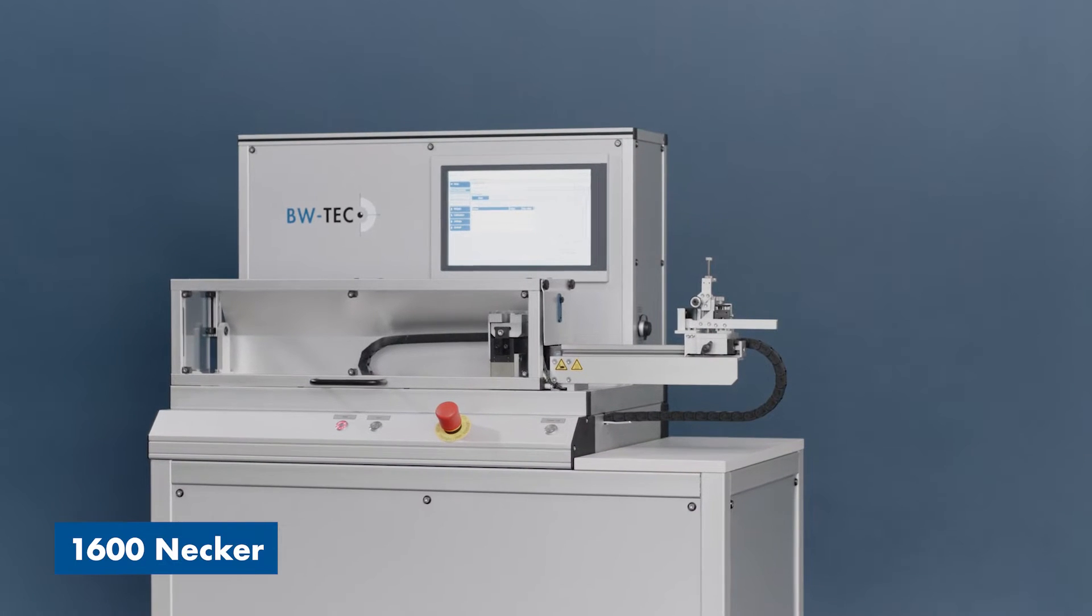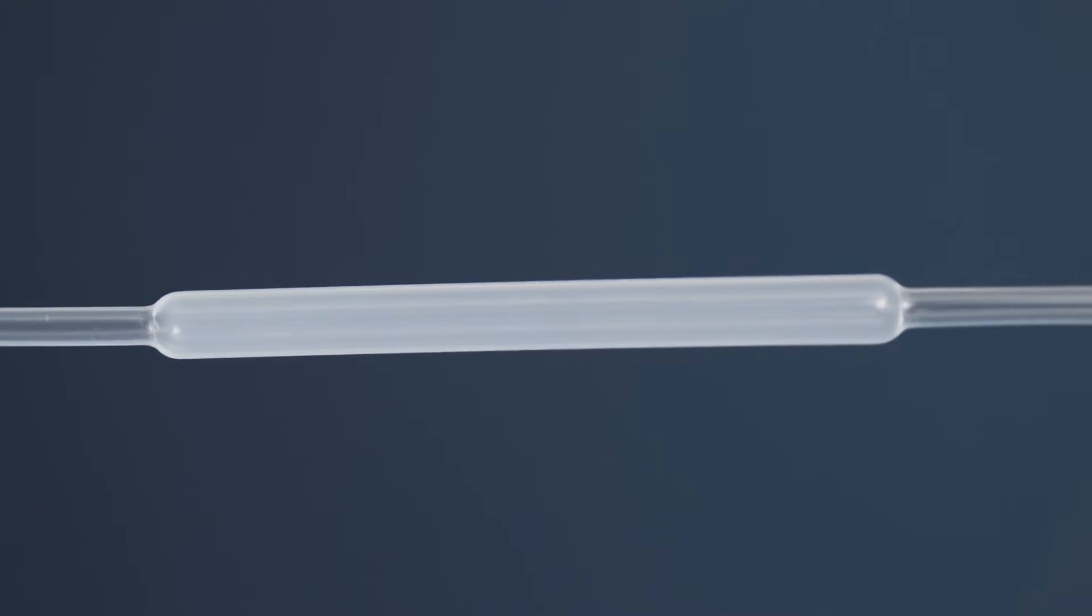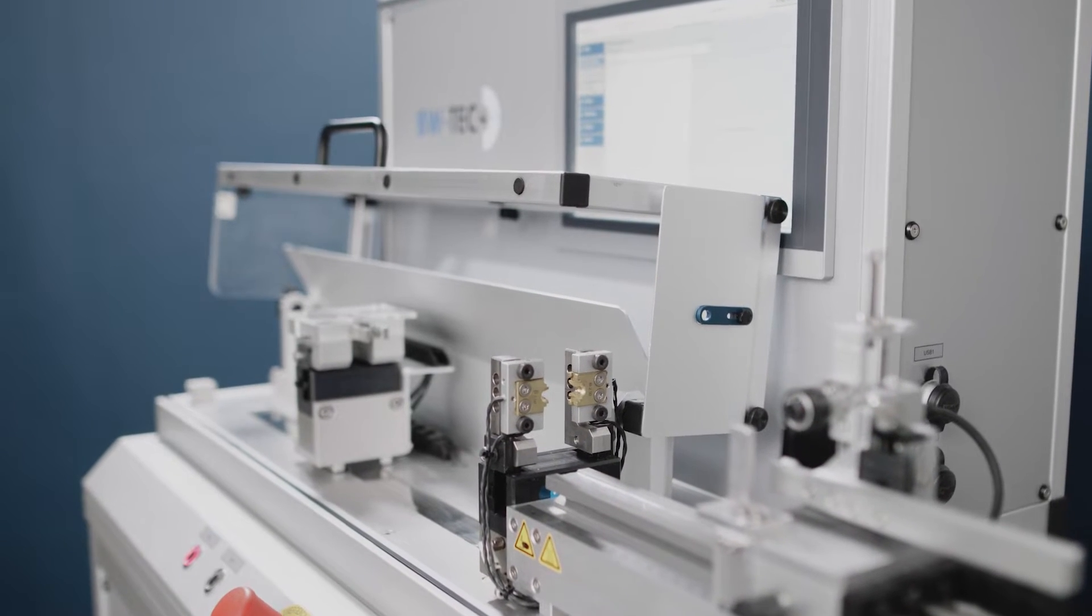The BWTEC 1600 necking machine allows defined neck down of various types and dimensions of balloon tubes to create the parison required for the balloon forming process.